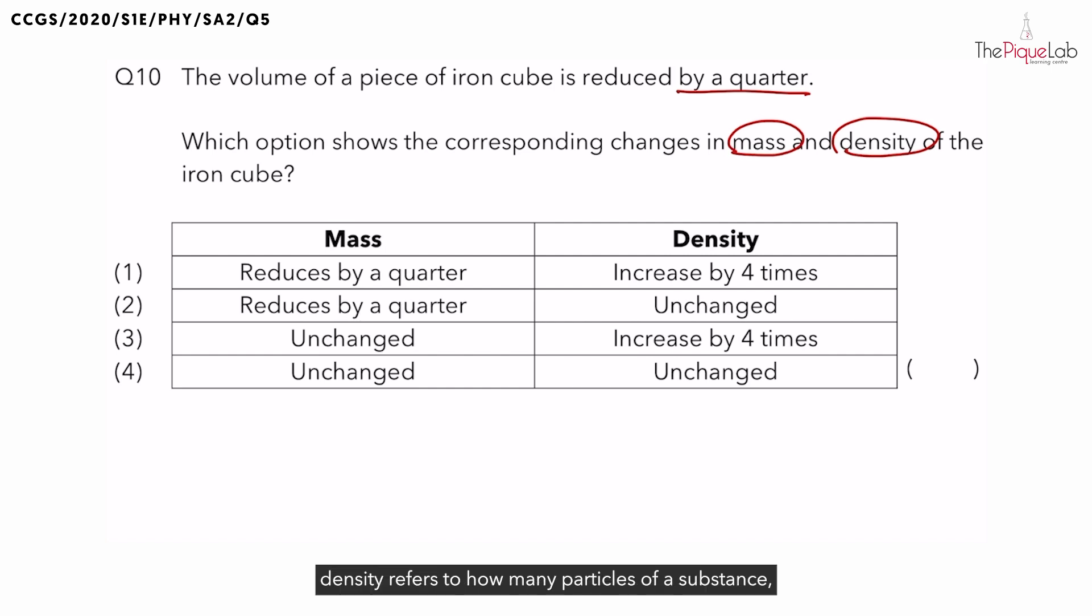At the particle level, density refers to how many particles of a substance, i.e. its mass, that can be packed within a unit volume. So density is actually a measure of mass per unit volume of an object. The formula can be written as density equals mass divided by volume.